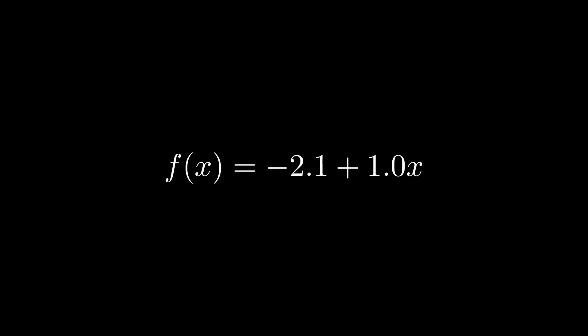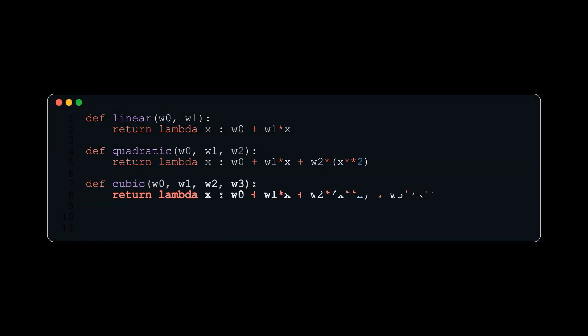However, we do not know if a straight line is the best representation for our data. So we can use different order polynomials, like a quadratic, a cubic, a quartic, or any order polynomial, and we will have to keep that in mind throughout the video. Here's a snippet of code of how I'm representing these different types of functions.